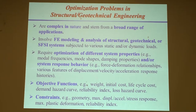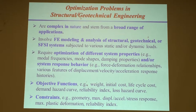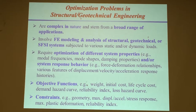The objective functions and constraint functions can be interchanged. So the objective can be weight, initial cost, or life cycle cost. If you're interested in performance-based earthquake engineering, you can use attributes like the demand hazard curve, mean annual rate of exceeding a certain limit state, and the loss hazard curve. The constraint can be formulated in terms of displacement, deformation, or force. You can minimize weight for a certain maximum probability of failure, or minimize the probability of failure for a given weight.